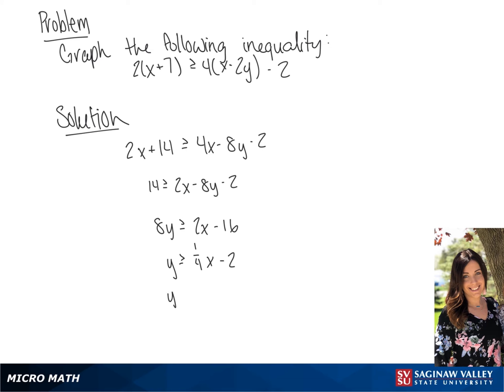Once we divide both sides by 8, we get y is greater than or equal to 1/4 x minus 2. This gives us a y-intercept of (0, -2) and a slope of 1 over 4.